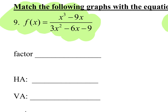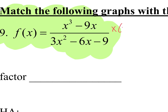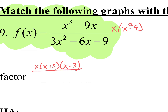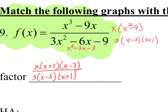When you factor the top, take out x and you're left with x squared minus 9. Can you factor that more? Yes — so the numerator is x times x plus 3 times x minus 3. Factor the bottom: you can take out a 3, leaving x squared minus 2x minus 3, which factors as x minus 3 times x plus 1. So the denominator is 3 times x minus 3 times x plus 1.